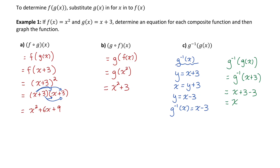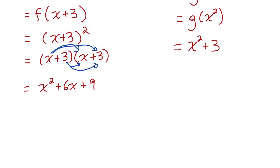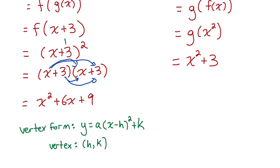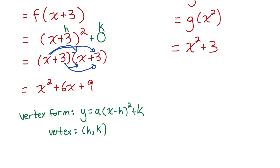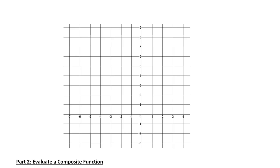Let's start by graphing part a. The expression x plus 3 squared is actually in vertex form, which makes it easy to graph. Vertex form for a quadratic looks like a times x minus h squared plus k, where the vertex is at the point h, k. In this equation, we must be subtracting negative 3 to get x plus 3, so h is negative 3. I don't see anything added after the binomial squared, so k is 0. The vertex is at the point negative 3, 0. So I'll plot that point on my graph.